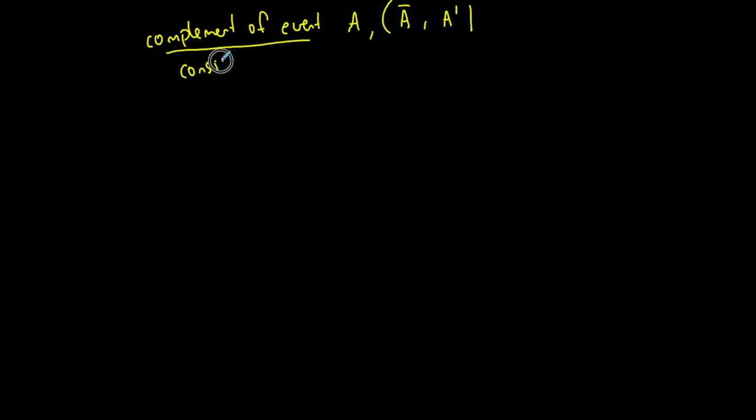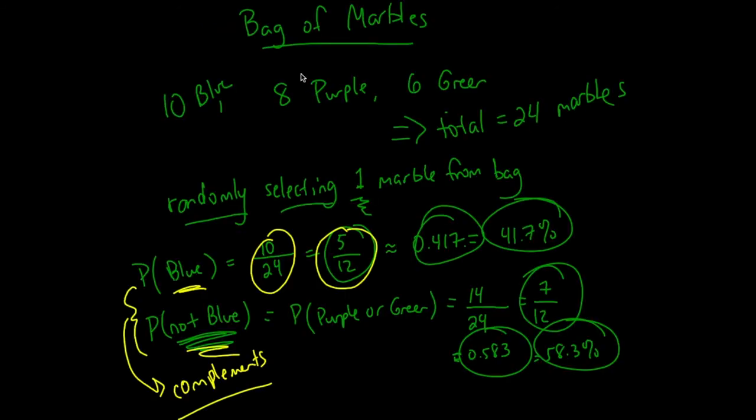Consists of all outcomes from the sample space that are not A. Where A does not occur. Everything but A. And that's what I have here, right? That's what I have here.